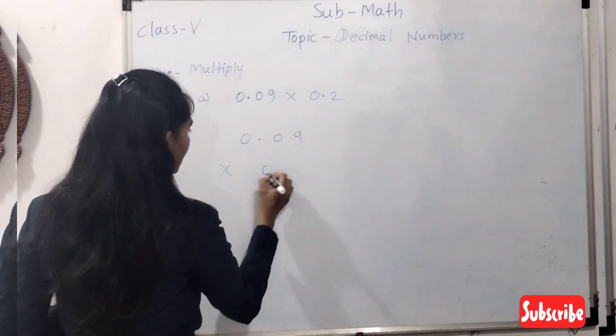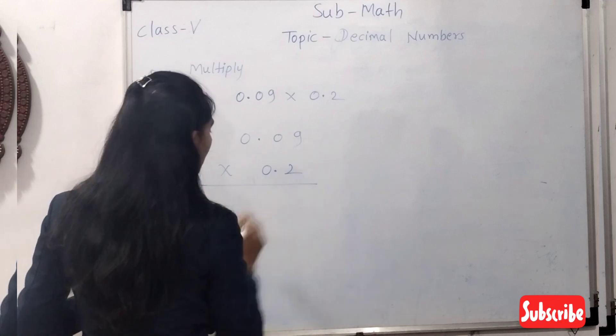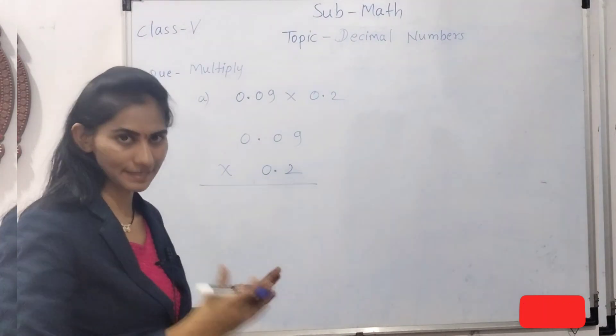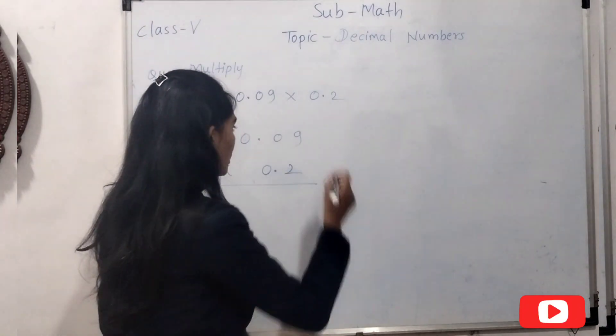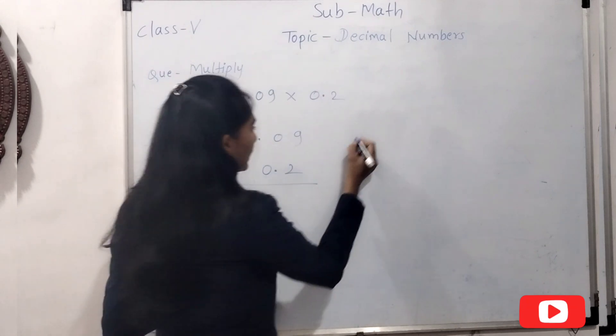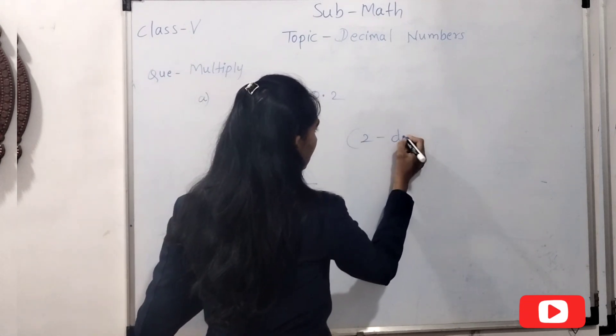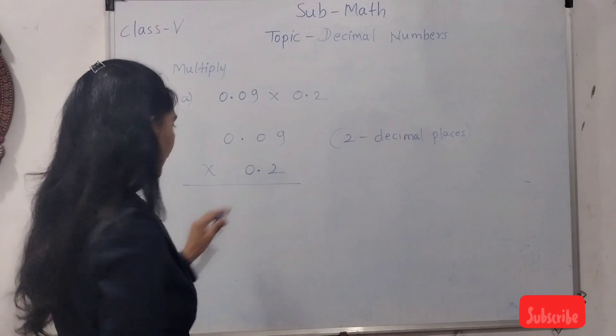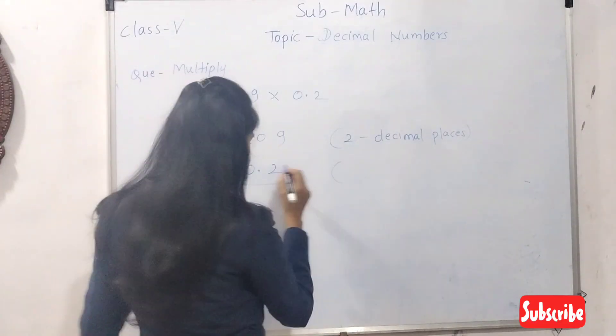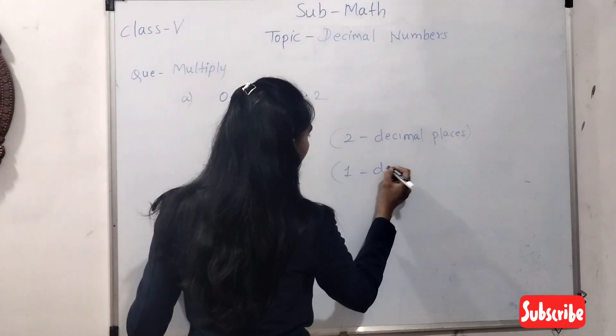While multiplying the decimal number, just count how many decimal places are there in both numbers. So in this 0.09, it has two decimal places, and in this number 0.2, you have only one decimal place.